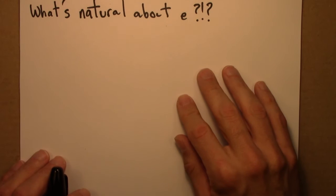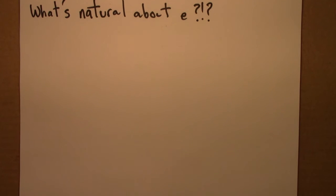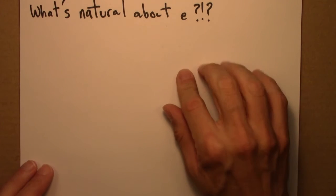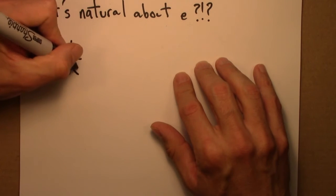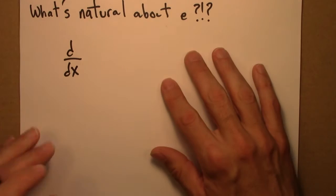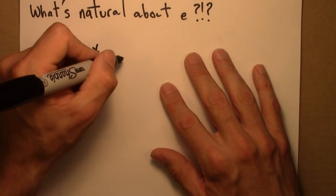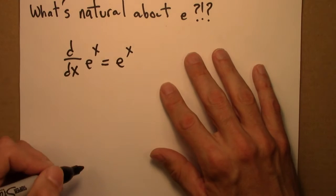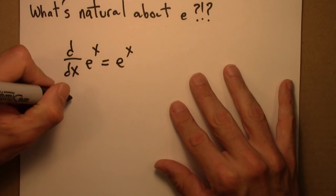So what's natural about e? It turns out that formulas in calculus work out a lot better if one uses e as a base for an exponent. So in particular, if we're interested in the derivative of an exponential function, and this is just a short aside for those who have had calculus, a reminder. The derivative of e to the x is e to the x. Super nice. It's a function that is its own derivative. It's its own rate of change.